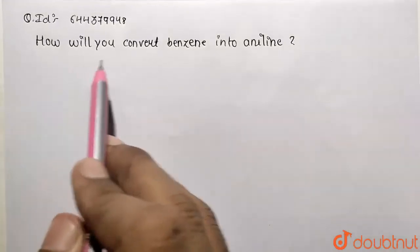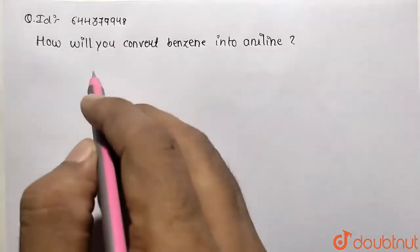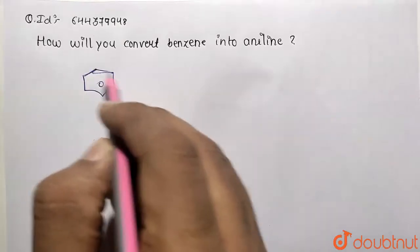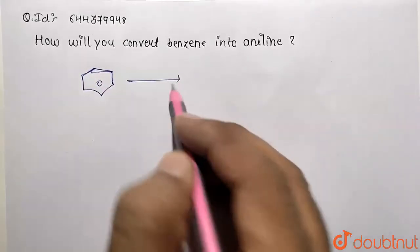Hello students, in this given question we were asked how do you convert benzene into aniline. So what we are given first of all, benzene molecule, so C6H5 ring is given. So this is our benzene. Now you need to perform the nitration reaction first of all.